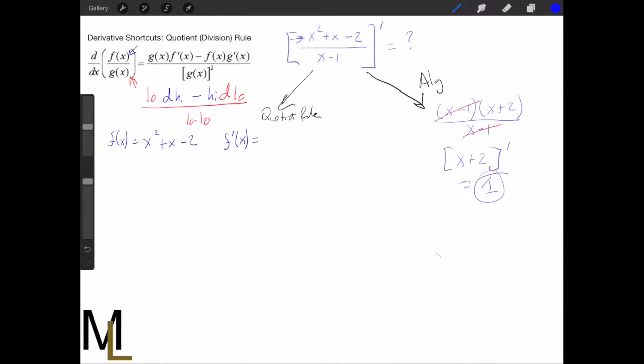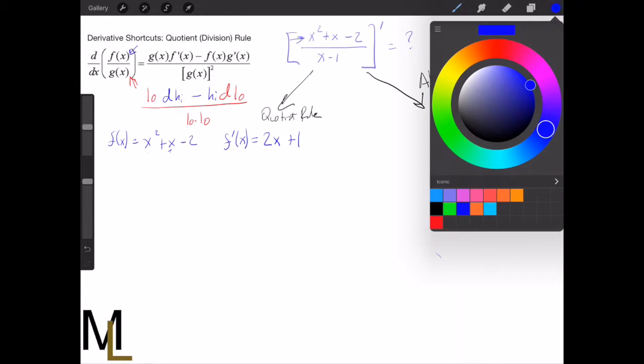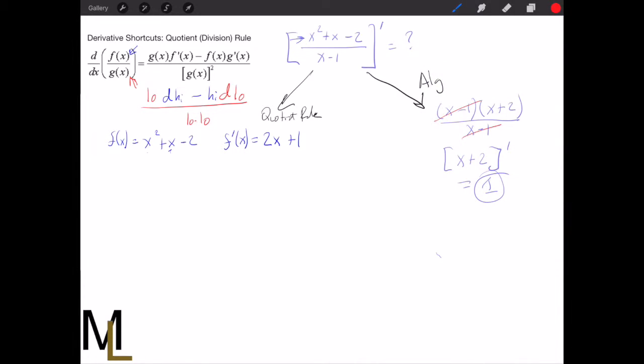And since we're going to need its derivative, let's just go ahead and take it now. So the derivative of this is going to be derivative of x squared is 2x. Derivative of x is 1. And the derivative of minus 2 is just 0. That's all using the power rule.